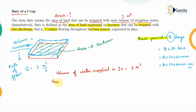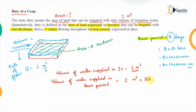So the volume of water supplied in the base period: if 1 cubic meter was the volume supplied in 1 second, then in the base period it will be multiplied by that time. So it will be 1 cubic meter × B × 24 × 60 × 60, which comes out to be 86,400 × B cubic meters. This is the volume of water supplied in the base period.